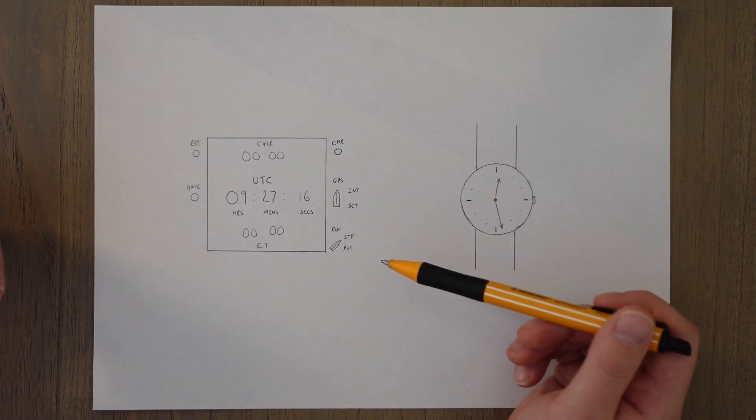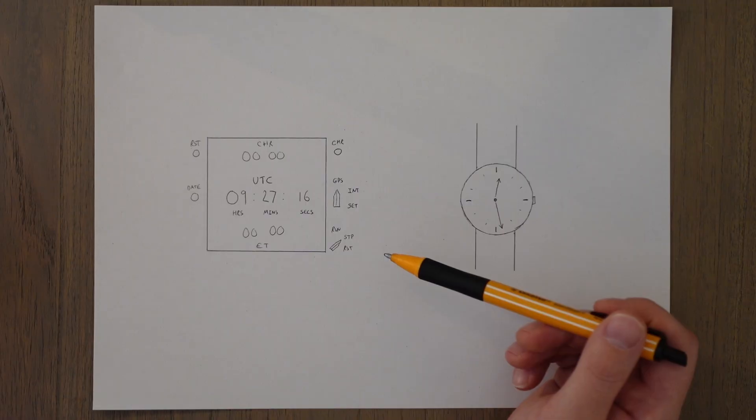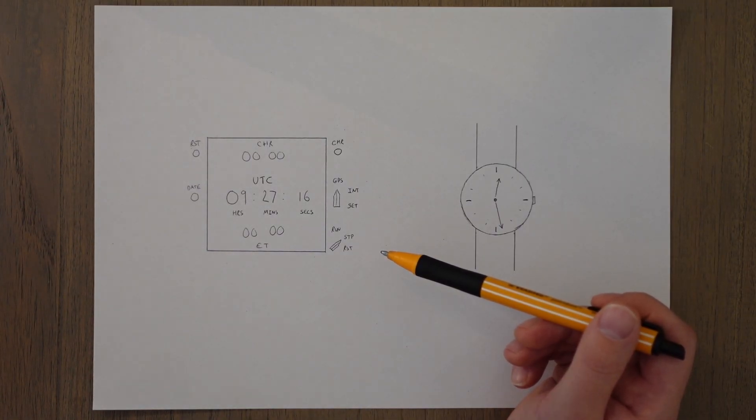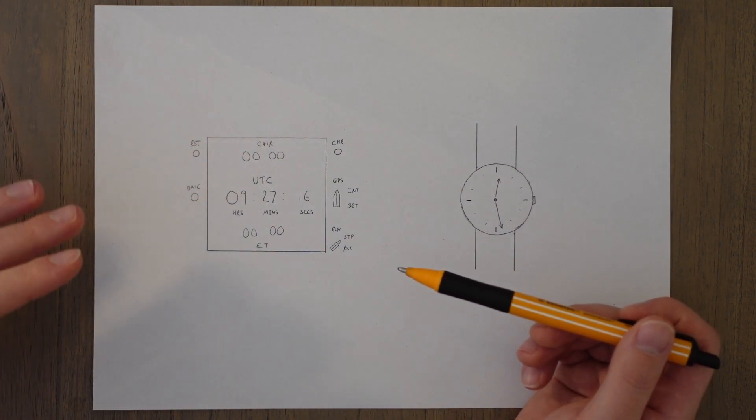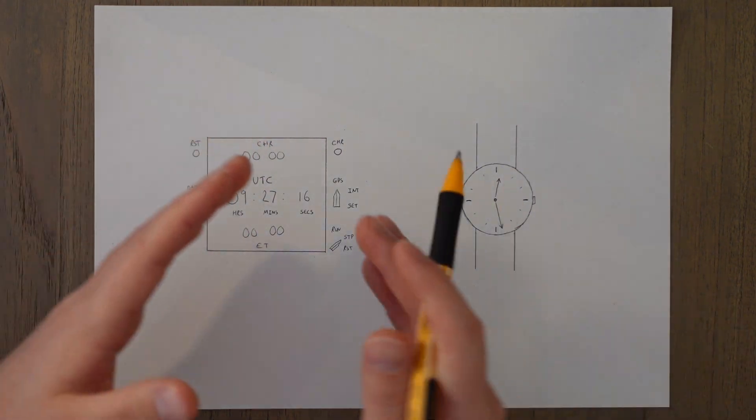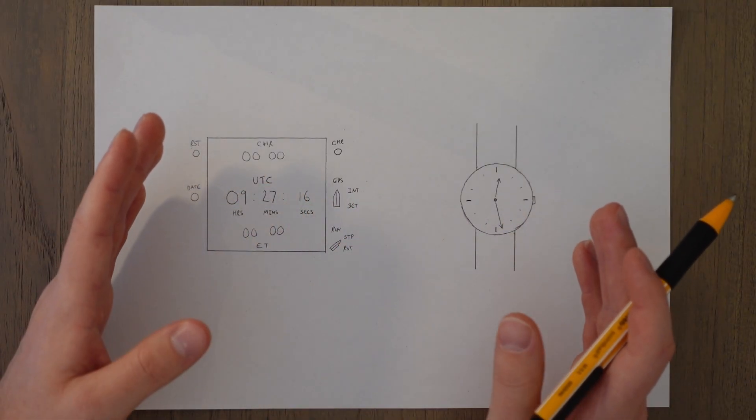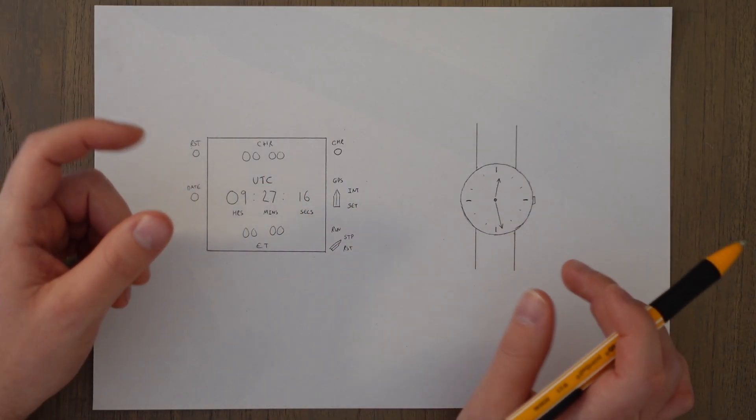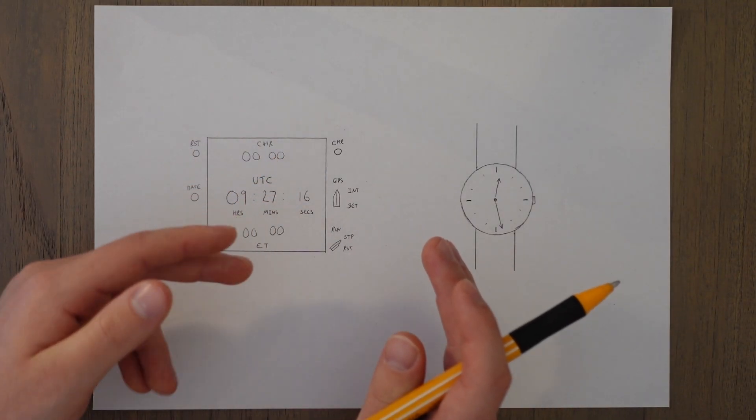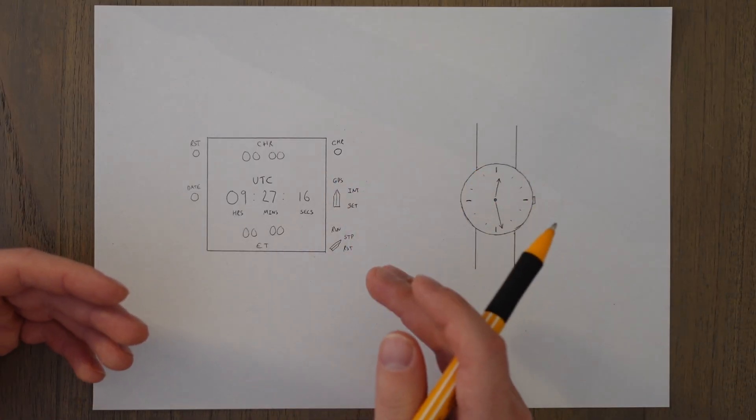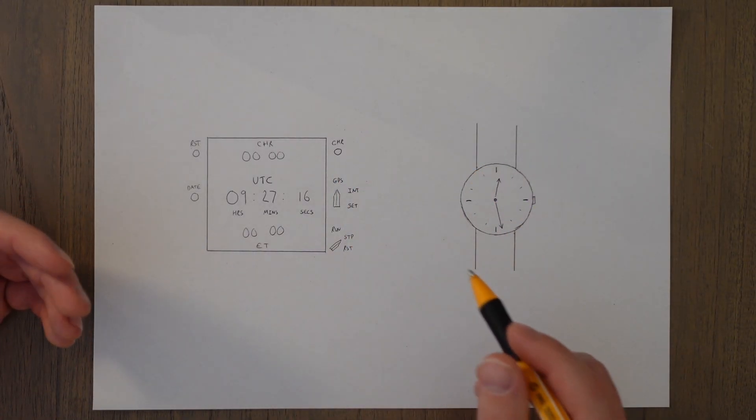We also have the elapsed time, which we can use for longer timing, typically for the time of pushback to the time of pulling back on stand again to get the block time of a flight, which is the flight time plus taxiing. Or we could use to record just the flight time by selecting on just before takeoff and off just after landing.